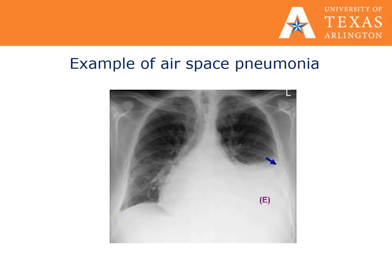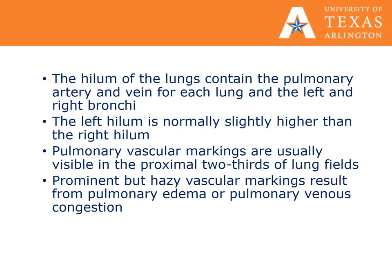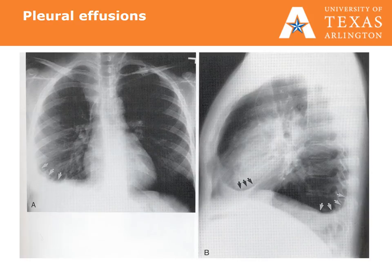This is a chest X-ray indicative of airspace pneumonia and air bronchogram signs. Branching bronchi become visible with contrast because they are filled with fluid as in an airspace pneumonia. The hilum of the lungs contains the pulmonary artery and vein for each lung and the left and right bronchi. The left hilum is normally slightly higher than the right. Pulmonary vascular markings are usually visible in the proximal two-thirds of the lung fields. Prominent but hazy vascular markings result from pulmonary edema or pulmonary venous congestion. This X-ray shows a right middle lobe and right lower lobe pleural effusion in both the AP and lateral film.